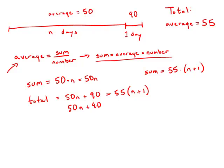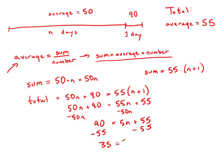We'll distribute on the right side to get 55n plus 55. We will subtract 50n from both sides, and then subtract 55 from both sides. 90 minus 55 is 35. We get 35 equals 5n, or in other words, n equals 7. And this is answer choice E.